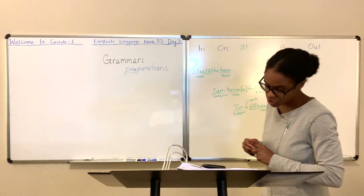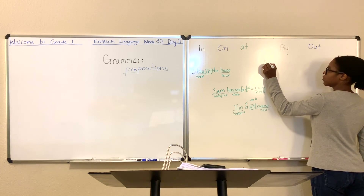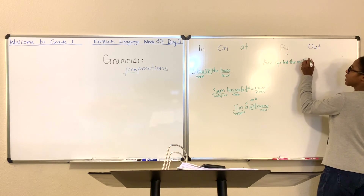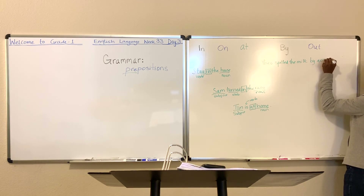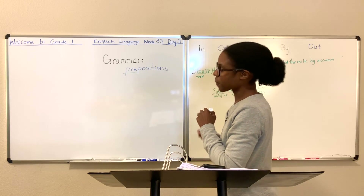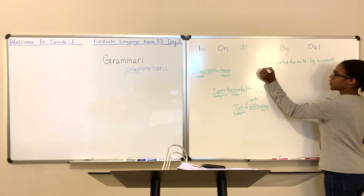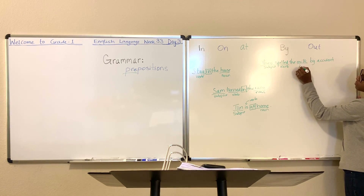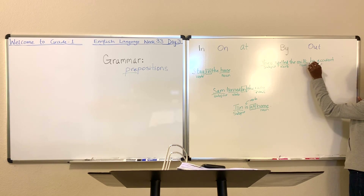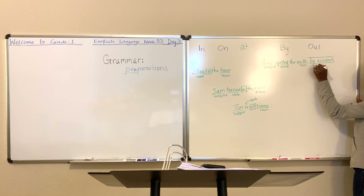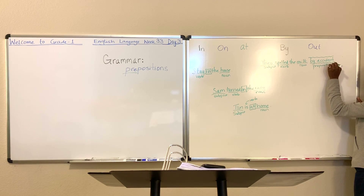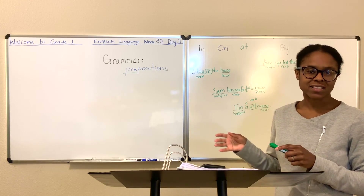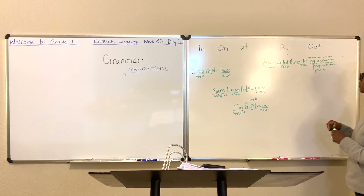Let's find another sentence using the word 'by.' Theo spilled the milk by accident. Theo is the subject, 'spilled' is the verb, 'milk' is another noun, and 'by accident' is what we call a prepositional phrase. Don't worry about that too much — just focus on 'by.' He spilled it by accident. How? By accident. And that particular one would answer the question of how something occurred.